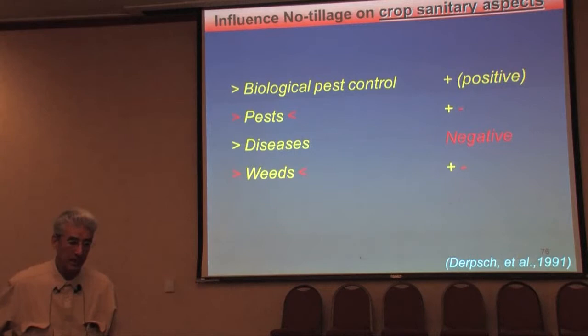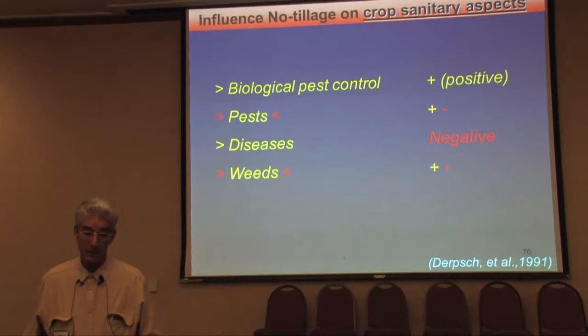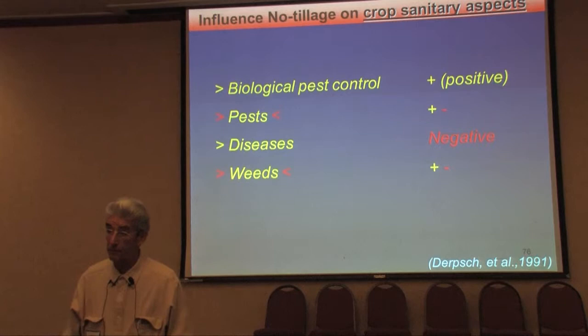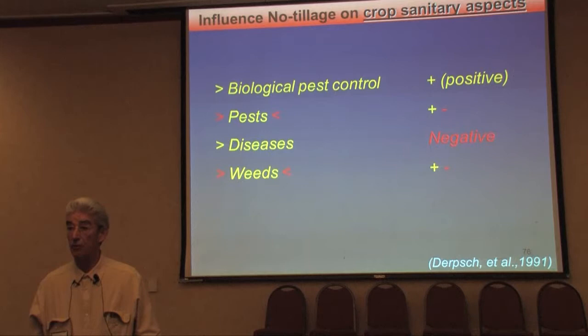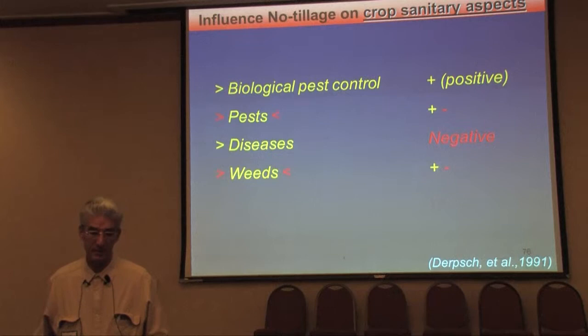What's the influence of no-tillage on crop sanitary aspects? Biological pest control is increased — that's positive. Pests may increase or may be reduced depending on the specific pest, the crop, and the year. But all in all, it's not more and not less in no-tillage than in conventional tillage — plus or minus, it can be more or less depending on the specific pest.